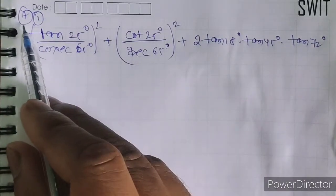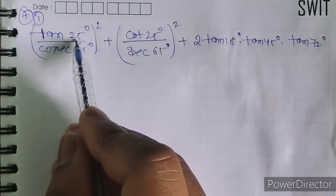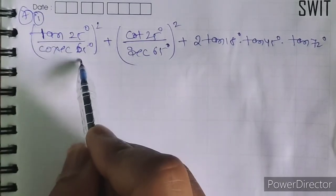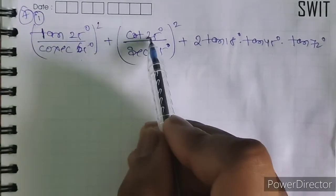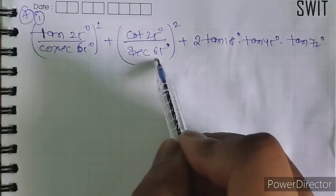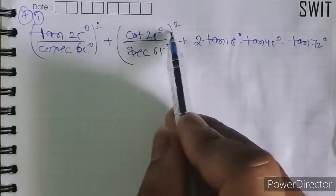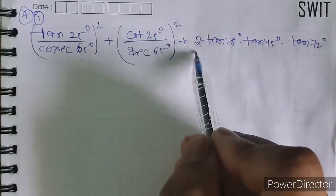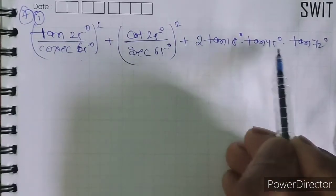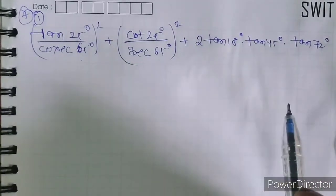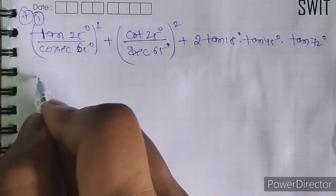Question number 7: (tan 25 degree / cos 65 degree + cot 25 degree / sec 65 degree), whole square, plus 2 tan 18 degree into tan 45 degree into tan 72 degree.